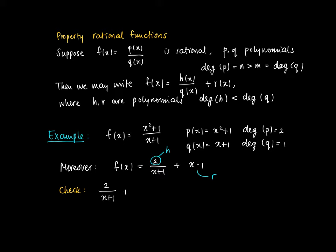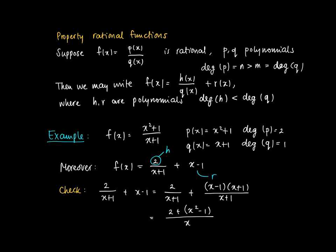So just check that this is valid. What is stated here: 2 divided by x plus 1, plus x minus 1. We choose to have the same denominators, so x minus 1 times x plus 1 divided by x plus 1, which gives us reason to add up the numerators: 2 plus x squared minus 1, divided by x plus 1. And 2 minus 1 equals 1, so this equals x squared plus 1 divided by x plus 1, which equals f(x). So this seems to be correct.